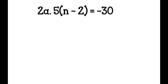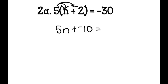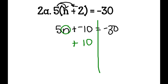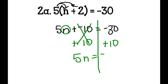Problem 2a: I have 5 times the quantity of n minus 2 equals negative 30. I add the opposite so it's plus negative 2 — it's easier to work with. 5 times n is 5n, plus 5 times negative 2 is negative 10, equals negative 30. I draw my line and circle my variable. To move the negative 10, I add a positive 10 to cancel it out. I'm left with 5n equals negative 30 plus 10, which is negative 20.